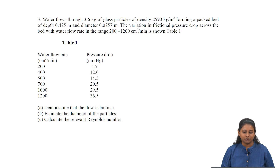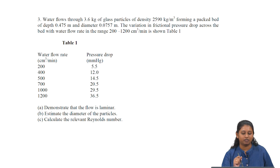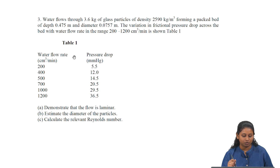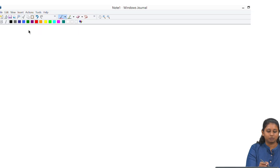Coming to the second question, this question deals with packed beds. Water flows through 3.6 kg of glass particles of density 2590 kg/m³, which forms a packed bed of depth 0.475 m and column diameter 0.0757 m. In the table below, the range of volumetric flow rates and the frictional pressure drop across the bed with the water flow are given. We have to demonstrate that the flow is laminar, estimate the diameter of the particles, and find the relevant Reynolds number.